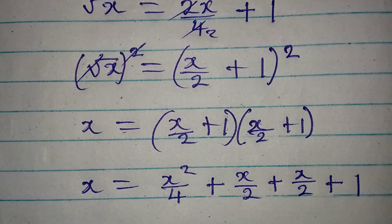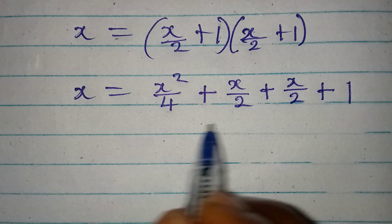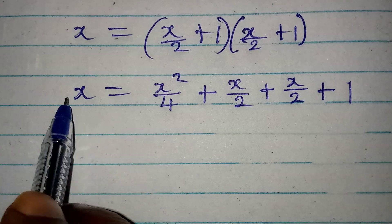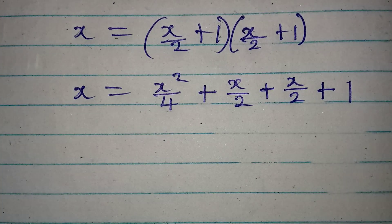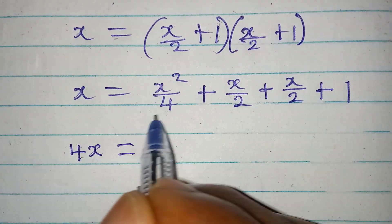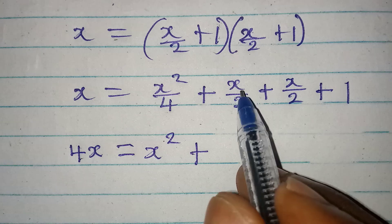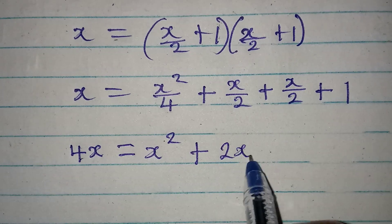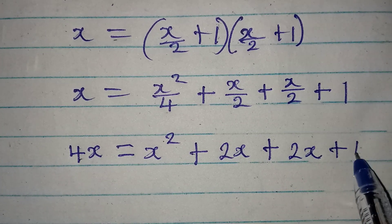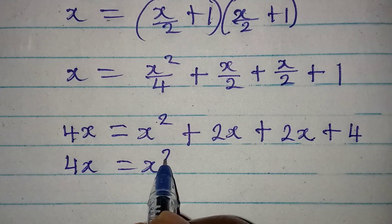Now let's add the middle terms and find the LCM, which is 4. Multiplying through by 4: 4x equals x squared plus 4 times x over 2 which is 2x, plus another 2x, plus 4. So 4x equals x squared plus 4x plus 4.